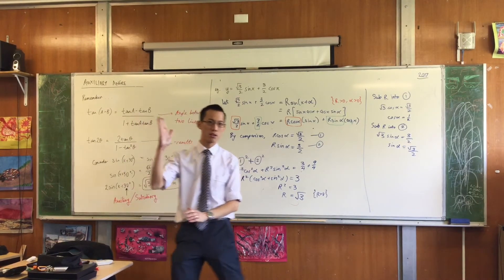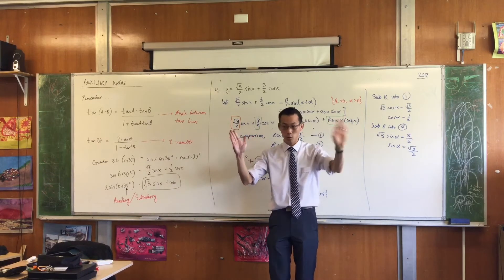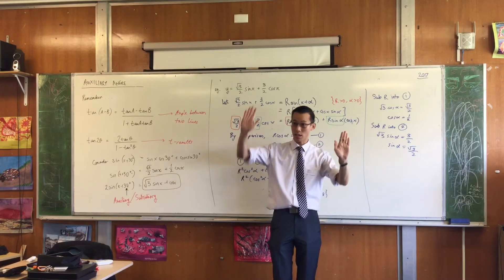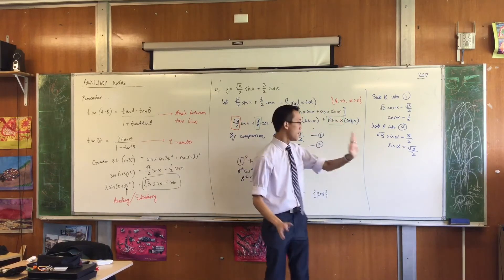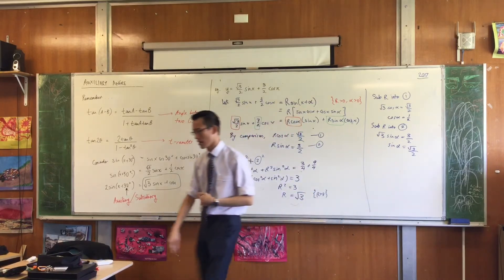60. But you know cosine keeps going. You're going to get another solution in the fourth quadrant, right? And that solution would be 300 degrees. 60 or 300. But now that you know this other piece of information, you can rule one of them out.